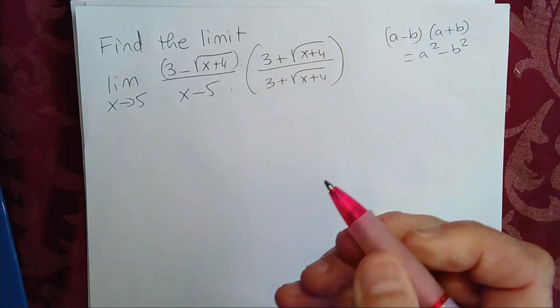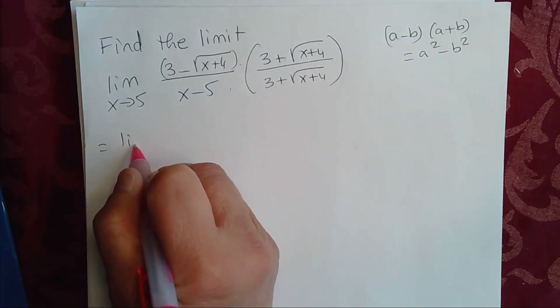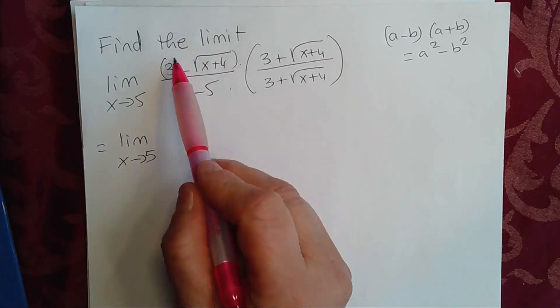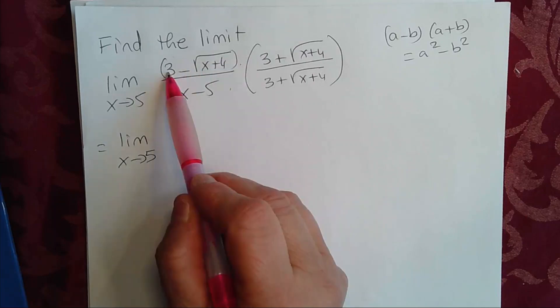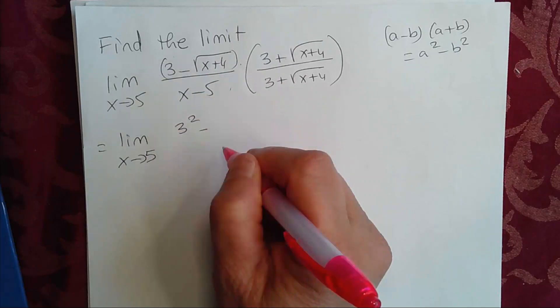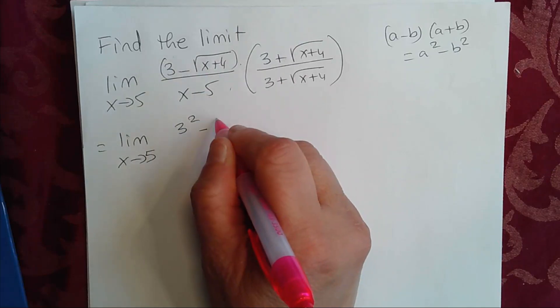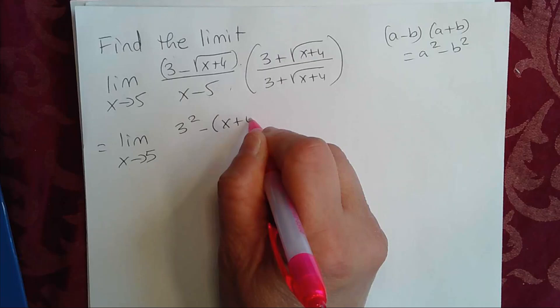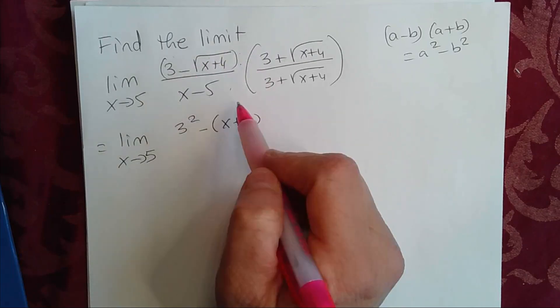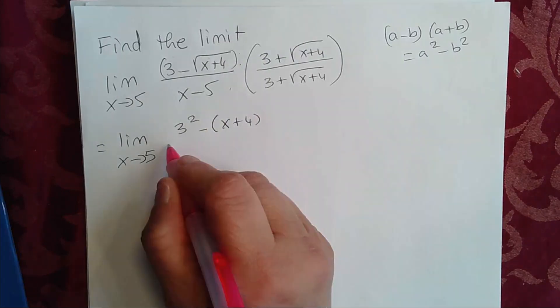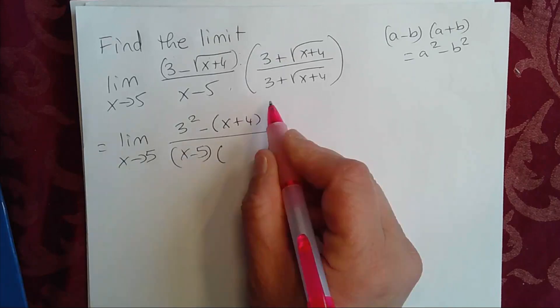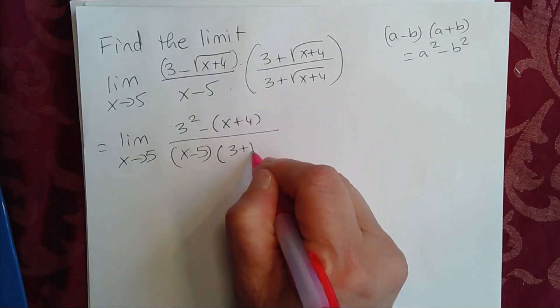So that's equal to the limit as x approaches 5. So this is your a, this will be your b. So the first term squared, 3 squared minus this one squared, which is x plus 4. Remember, the square cancels the square root and the radicand comes out. Divided by x minus 5 times 3 plus square root of x plus 4.